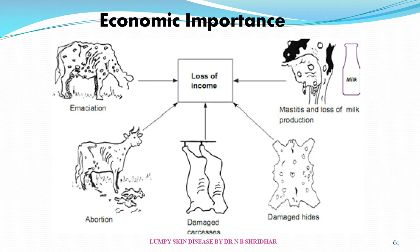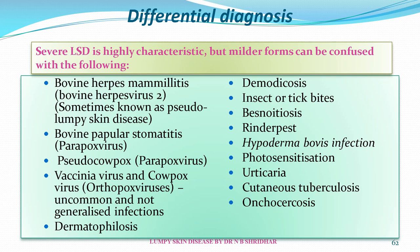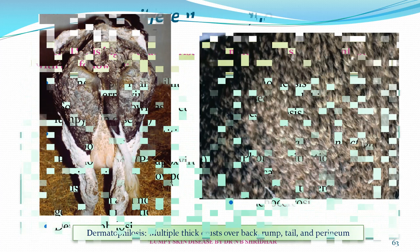There is significant economic impact due to damaged carcasses, abortions, emaciation, decreased conception rate, mastitis, and damaged hides. Differential diagnosis is important — severe LSD is highly characteristic, but milder forms can be confused with bovine herpes mammillitis, bovine papular stomatitis, pseudocowpox virus, vaccinia virus, dermatophilosis, demodicosis, insect or tick bites, besnoitiosis, rinderpest, photosensitization, urticaria, cutaneous tuberculosis, or onchocercosis if not observed carefully.